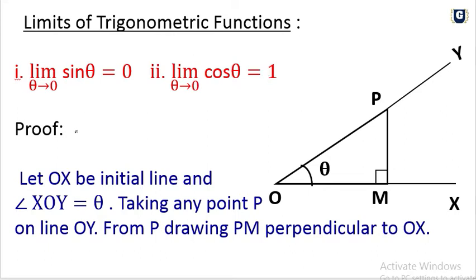Let OX be the initial line and angle XOY equal to theta. Taking any point P on line OY, from P drawing PM perpendicular to OX. In this figure OX is the initial line, angle XOY equals theta, and P is a point. PM is perpendicular to OX, forming triangle OPM.